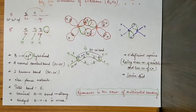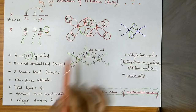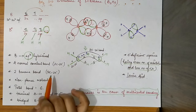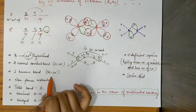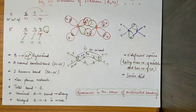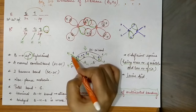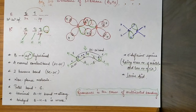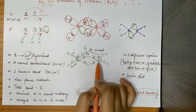This molecule has 2 banana bonds, which are 3-center 2-electron bonds. This is a non-planar molecule. If you look at its 3D structure, the two terminal boron–hydrogen bonds are above the plane and two are below the plane, forming the ring — so always remember this is a non-planar molecule.